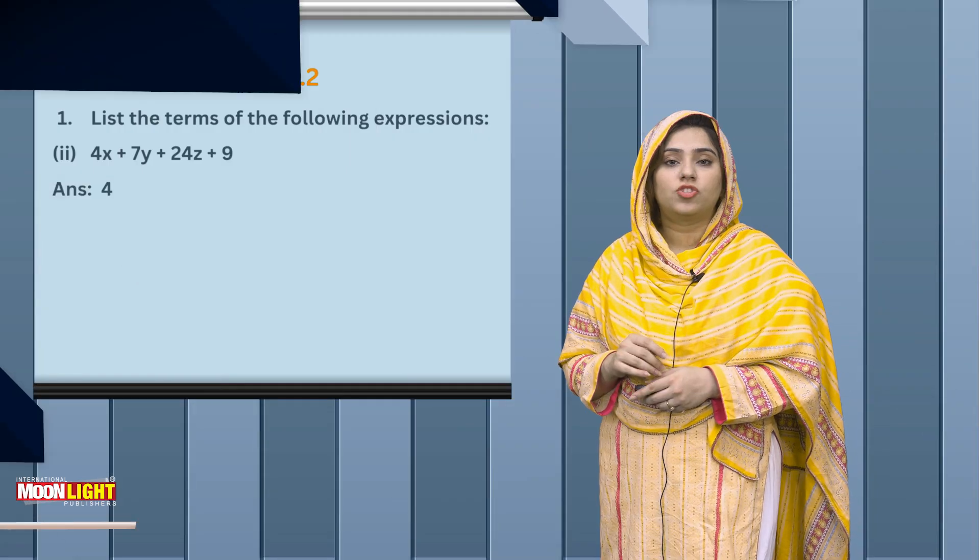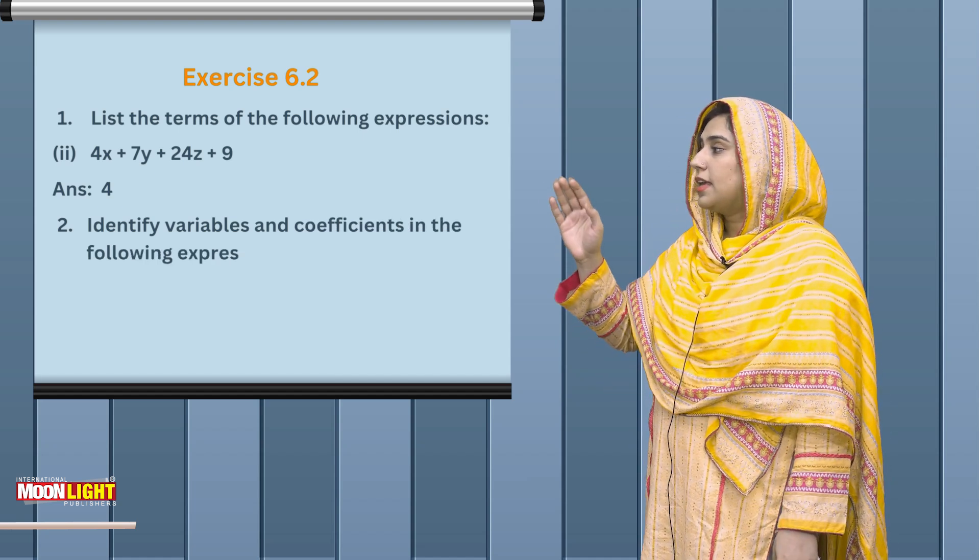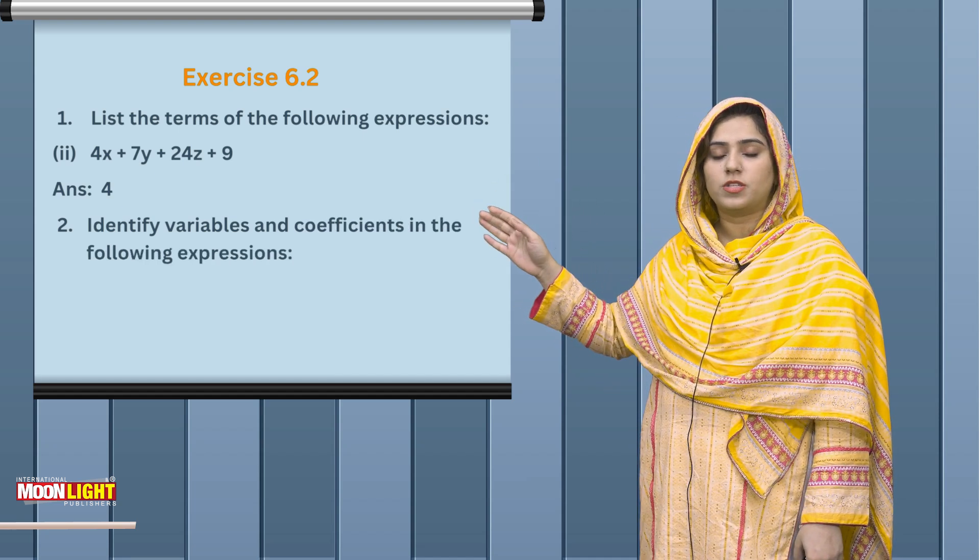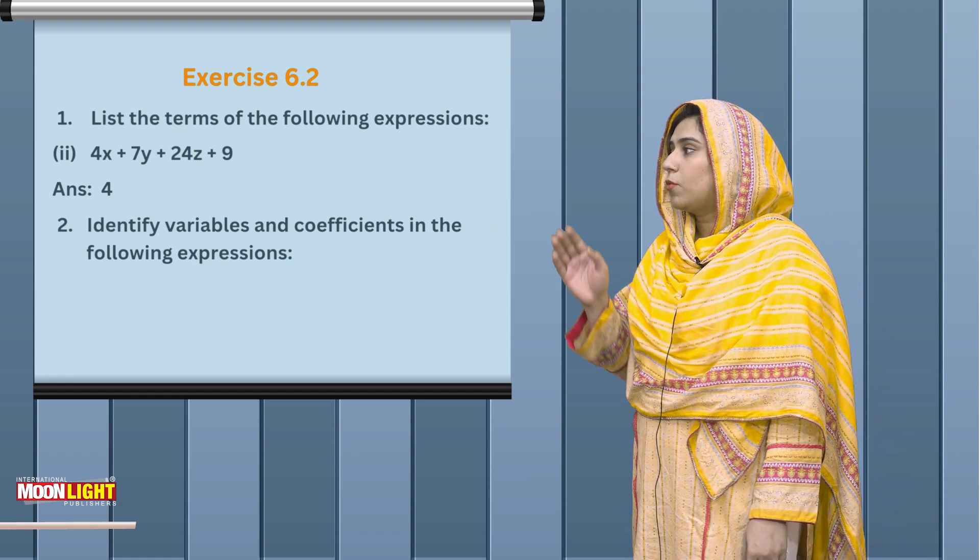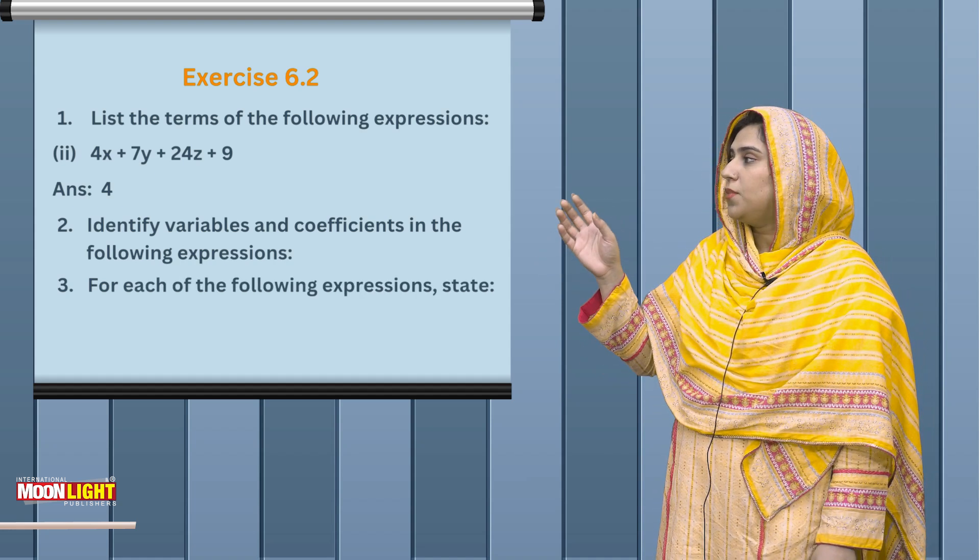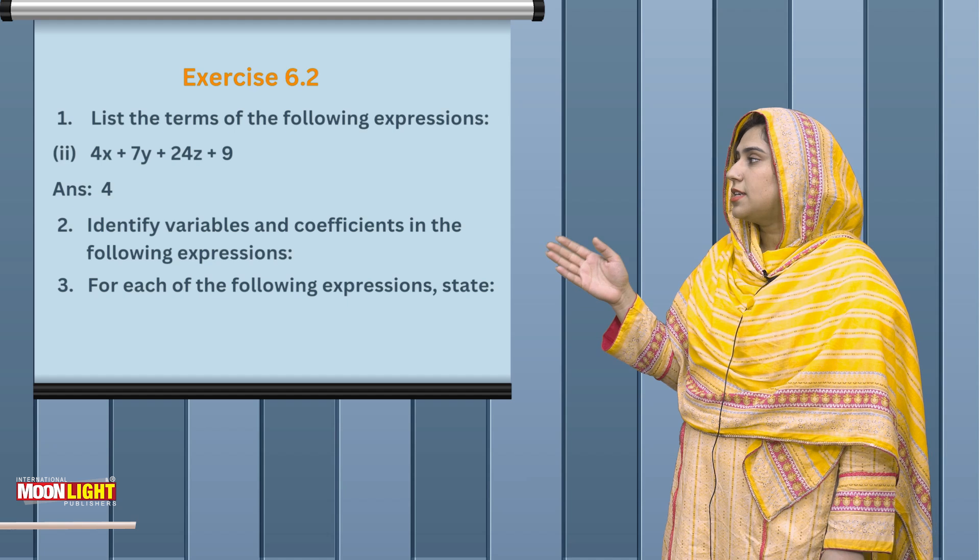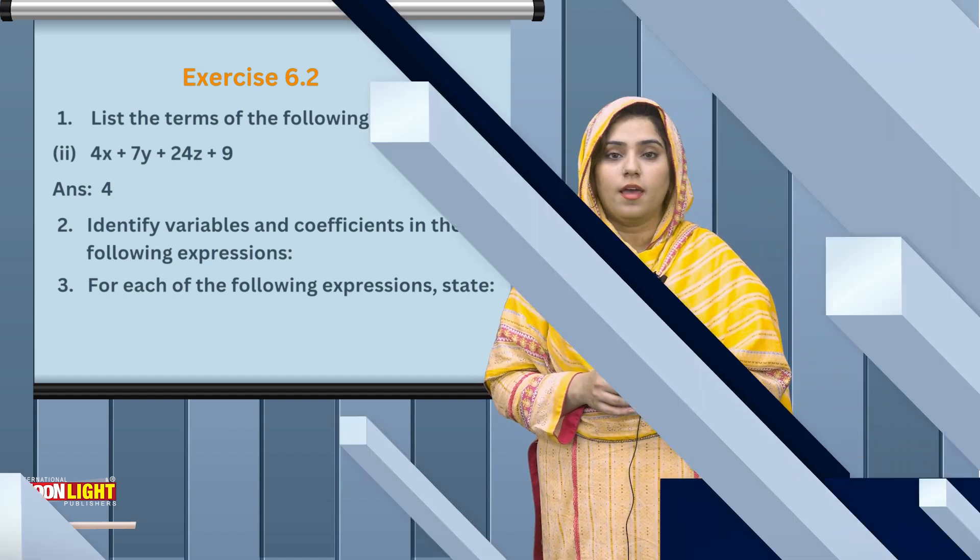Question number 2 is the same - just like you performed the activity, you are given some expressions and you have to find the coefficients and variables and write their answers. In question number 3, you are given some expressions and you have to tell the number of terms, and in the second part you have to tell the coefficients of the unknown values. So students, this was our today's video. I hope today's lecture was clear to you and you can now differentiate between coefficients and constants. Stay tuned till next video. Allah Hafiz.